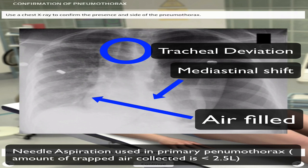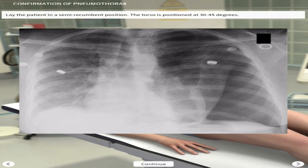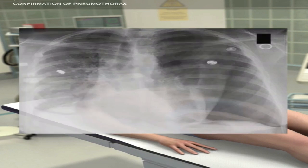Needle aspiration is used only for a primary pneumothorax where the amount of air trapped is less than 2.5 litres; if it's above that, other interventions are used.